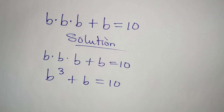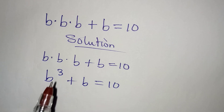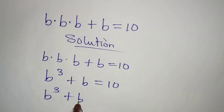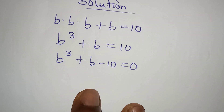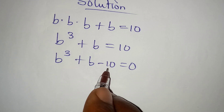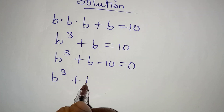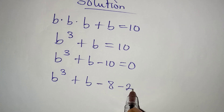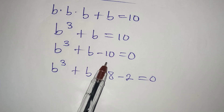This is simple. The next thing we are going to do is bring 10 to the left, so we have b to the power of 3 plus b minus 10 equal to 0. Then we are going to break minus 10 into 2 parts, so we have b to the power of 3 plus b minus 8 minus 2 equal to 0, because minus 8 minus 2 gives us minus 10.